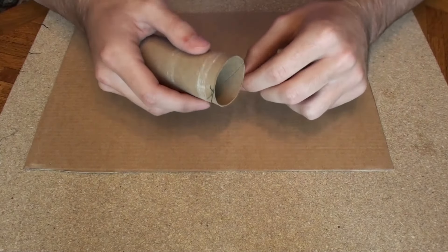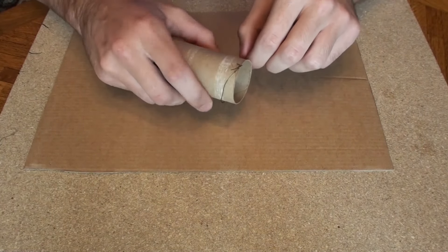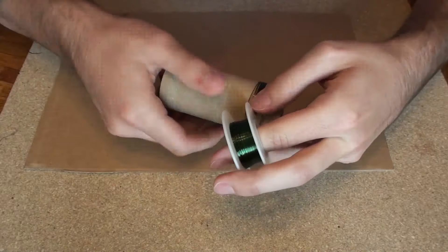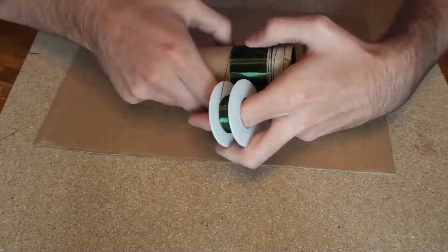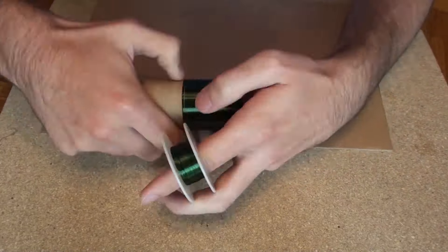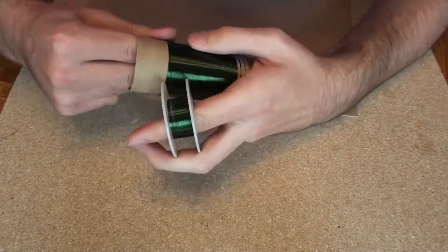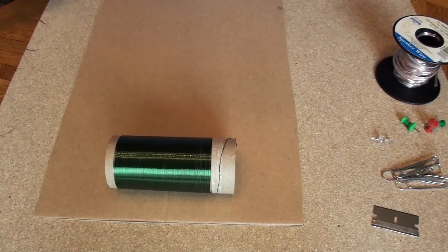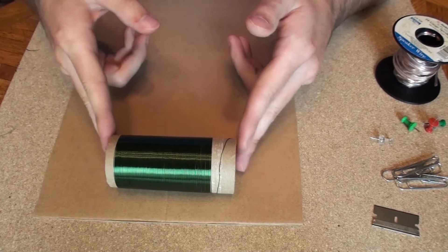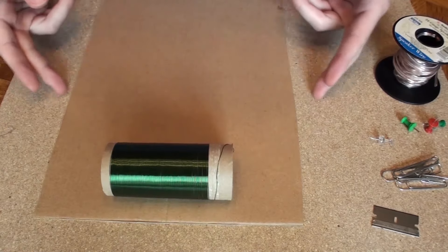Now we need to wrap this 120 times. Next, what you want to do is you're going to want to mount your coil onto your board.